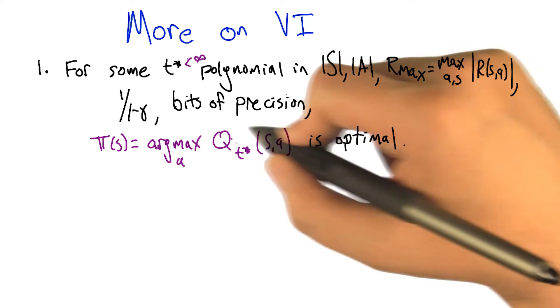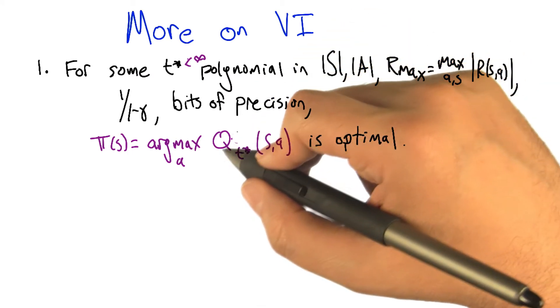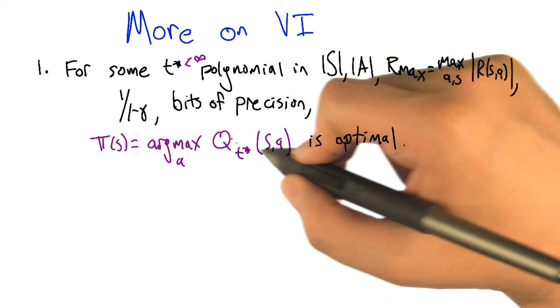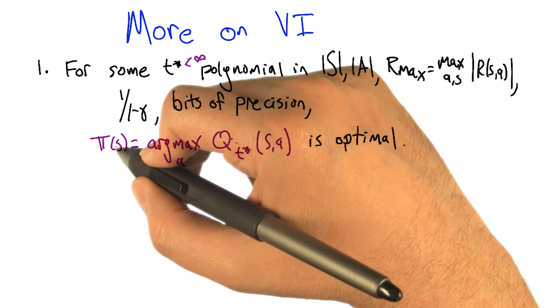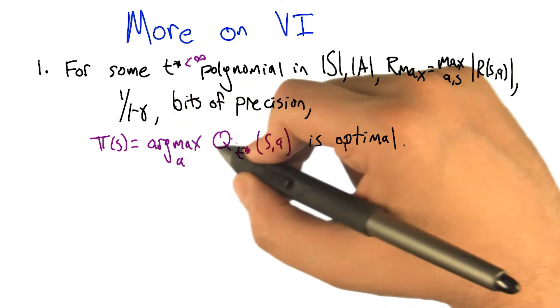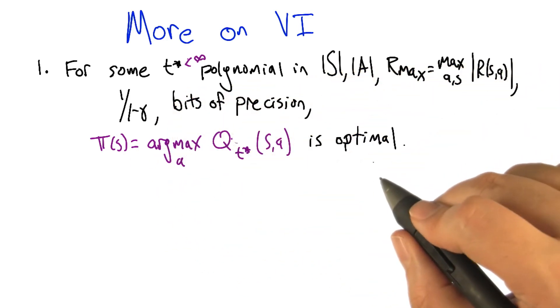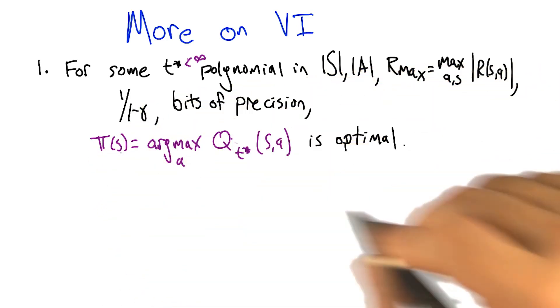So if we run value iteration for that many steps, the q function we get out is q_t*(s,a). If we define a policy π(s,a) which is just the greedy policy with respect to that q function, that policy is optimal.